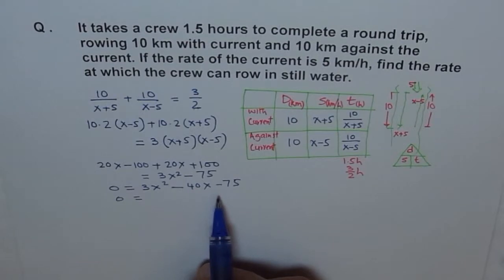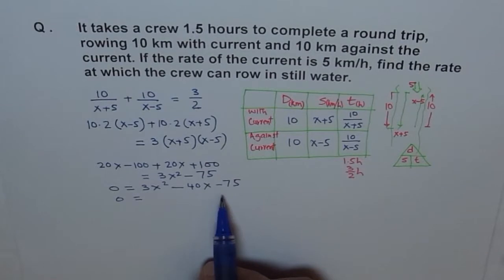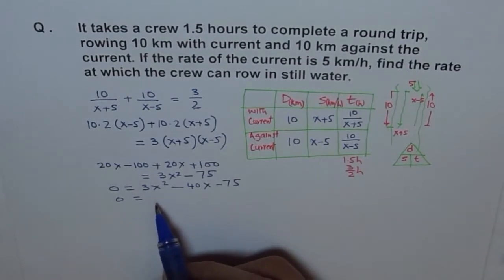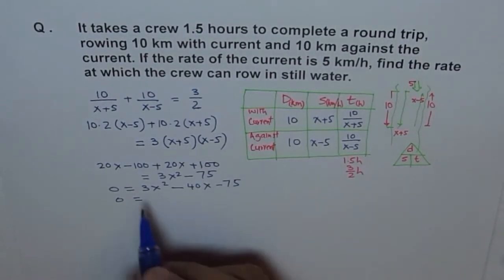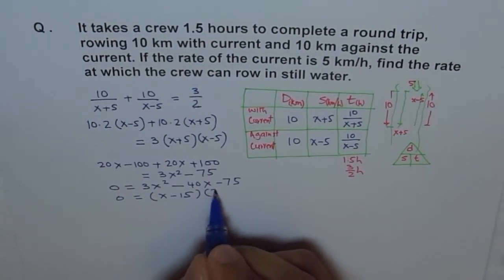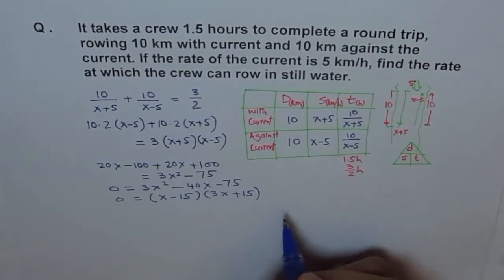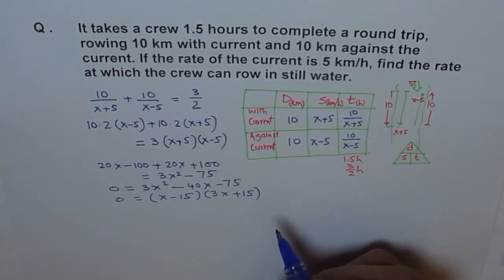Second is, you can factor this term. Correct? So, if you factor this from here, you can find product and sum and do the needful. So, when you do that factoring, you will get this, which is X minus 15 times 3X plus 15 equals to 0. I'm skipping steps on purpose.